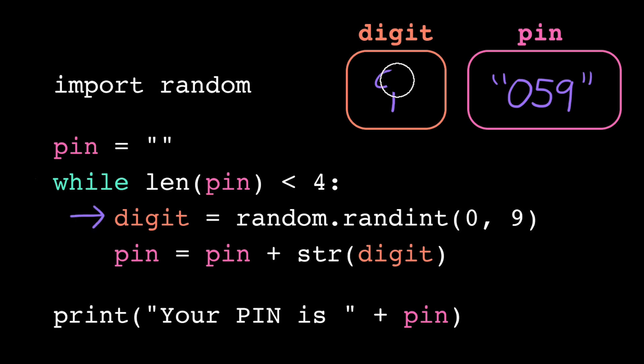Randint generates a 5 this time, so we store that in digit, and then we go on to the next line. Pin is now 0 5 9, we concatenate on the string 5, and we store that back in pin.